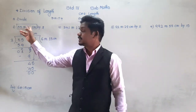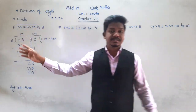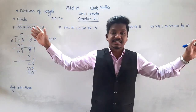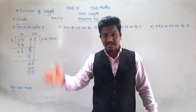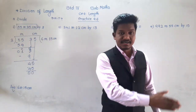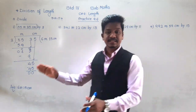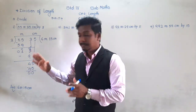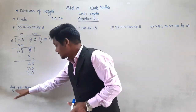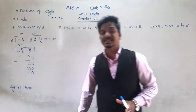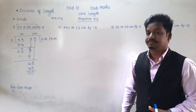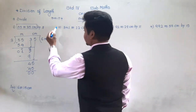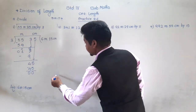When a 55 meter 35 centimeter long iron rod is divided into 9 equal parts, the length of each small part will be 6 meter 15 centimeter. This is the meaning of division of length.